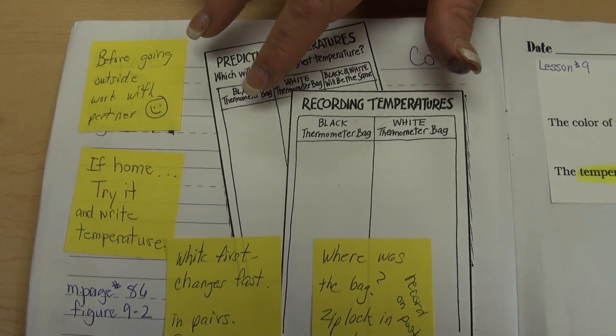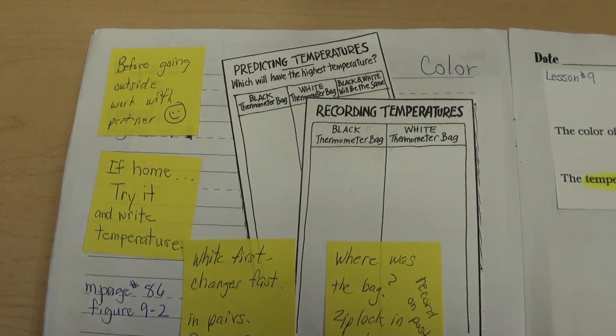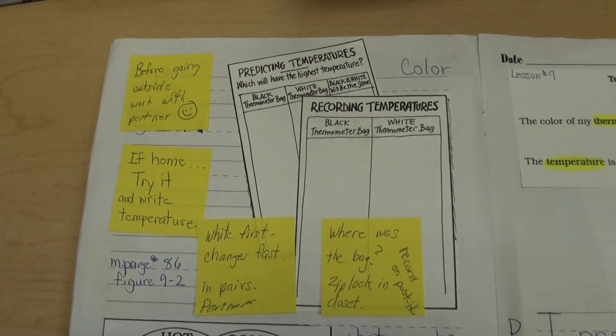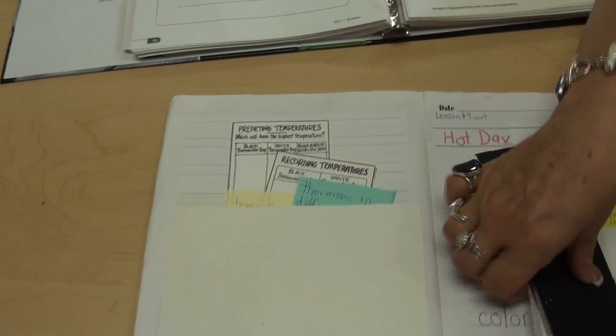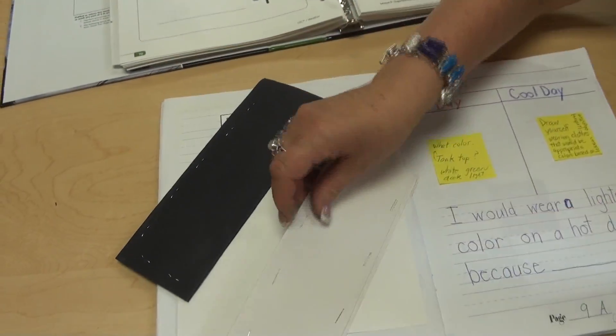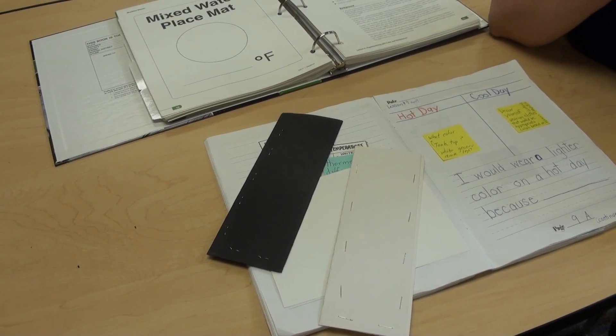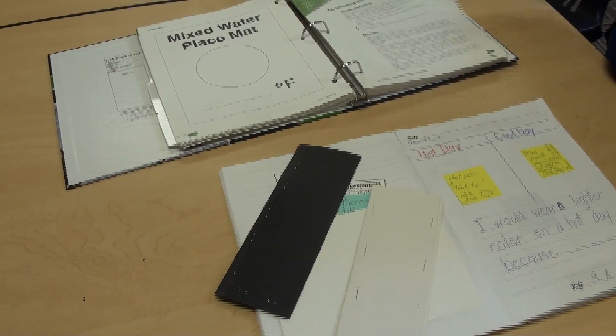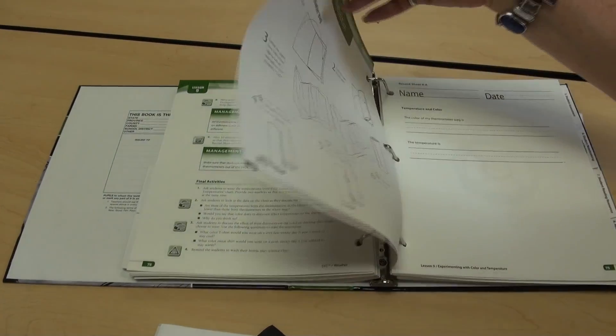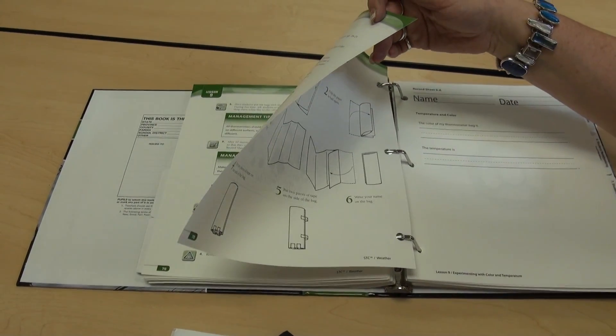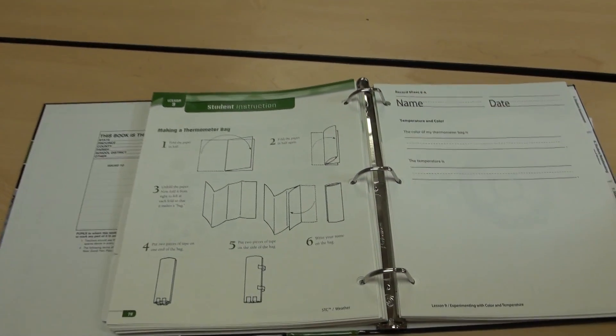And so the children with a post-it note will record what they believe is their prediction. Then they actually go outside with a sleeping bag or a little thermometer bag that they make with a partner. The instructions for making this bag are in this lesson on page 78, and it tells you step-by-step on how to construct the bags.